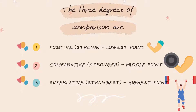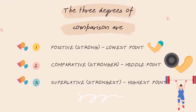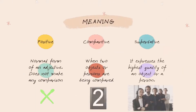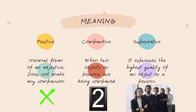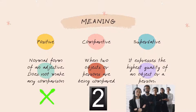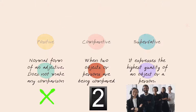Positive, comparative, and superlative are the three degrees of comparison. Positive is the lowest point, comparative is the middle point, and superlative is the highest point of comparison. Positive does not make any comparison at all. Comparative is applied when we compare two objects or persons. Superlative is used to express the highest quality of an object or a person.